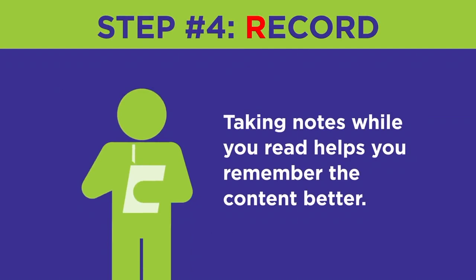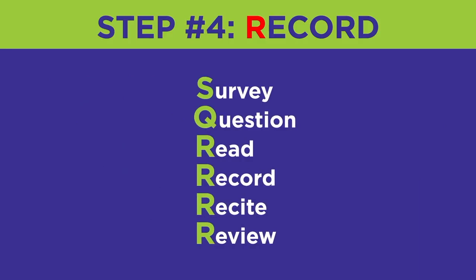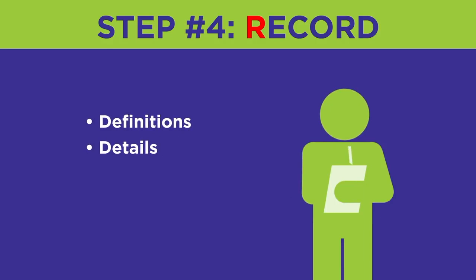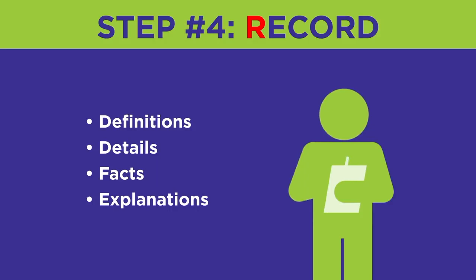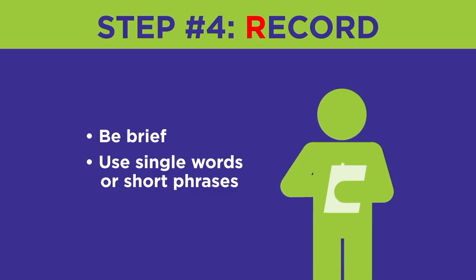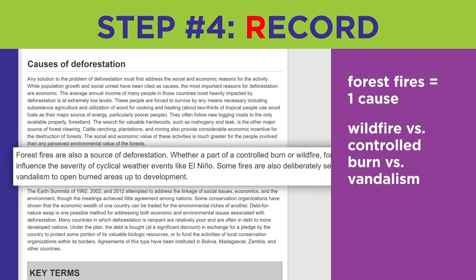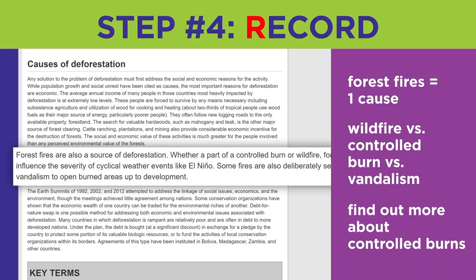Studies show that taking notes while you read helps you remember the content better. That's why record is the next step in the SQ4R method. As you read, write down or record definitions, details, facts, and explanations of concepts mentioned. Be as brief as possible — use single words or short phrases in place of sentences when it makes sense. Going back to the paragraph about forest fires, you might take these notes: forest fires equals one cause; wildfire versus controlled burn versus vandalism; find out more about controlled burns. If there is something that does not make sense to you, add a new question to your list.